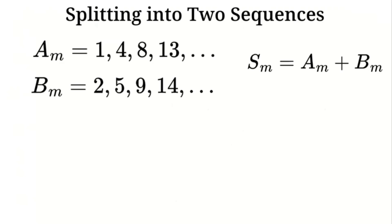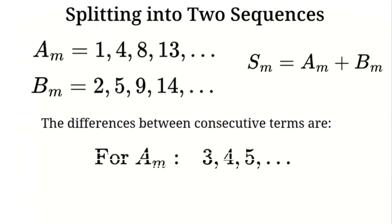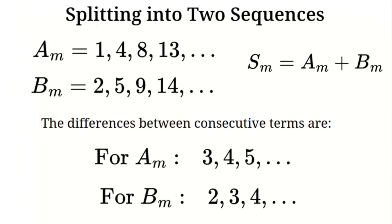Let's look at the differences between consecutive terms in each sequence. For Sequence A, the differences are 3, 4, 5, and so on. For Sequence B, the differences are 2, 3, 4, and so on. These differences suggest that both sequences are quadratic in nature. Let's use this information to find general formulas for Sequences A and B.